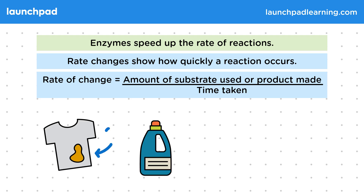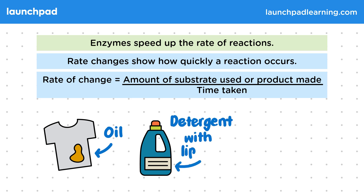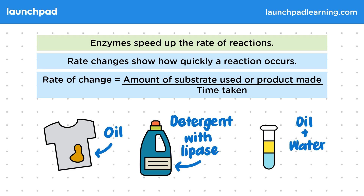This t-shirt has been stained with oil. Fortunately, biology has gone into making biological washing detergents that contain enzymes — for example, lipase — which breaks down fats and oils. This test tube contains a mixture of oil and water. We could measure how long it takes for the enzymes to break down the oil in the stain. How can we use this formula to calculate the rate of change in an enzyme reaction?